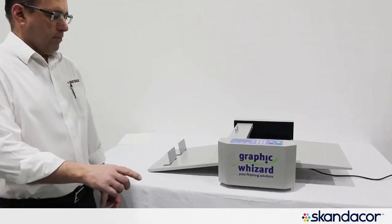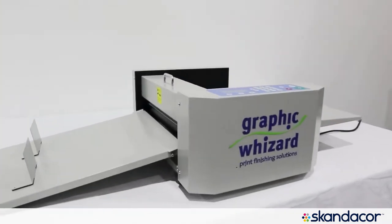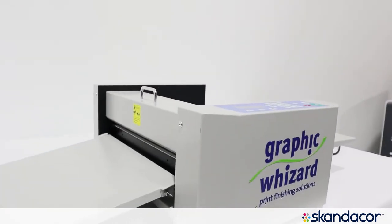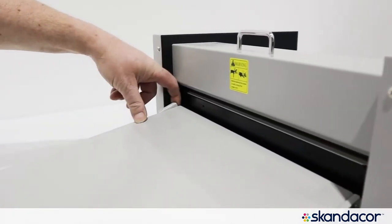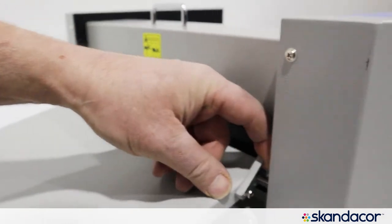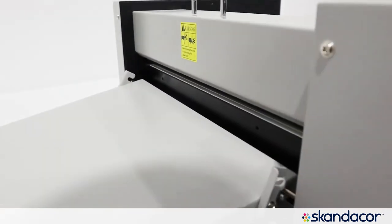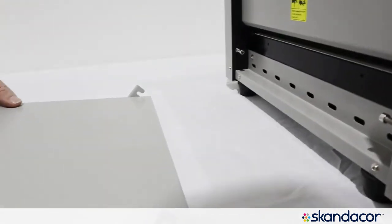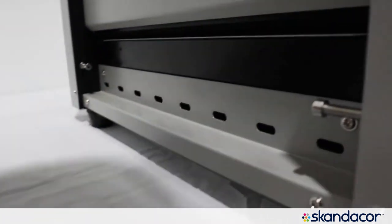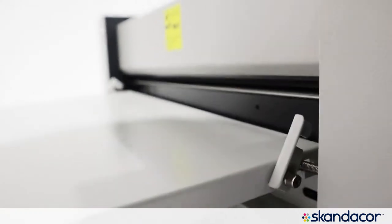The unit here on the table has very simple components. This is the exit tray here. It is locked in place with two little locking levers. You just flip them up, you push the tray forward and you can take this tray off. Very simple to take it off and you can set it back on.